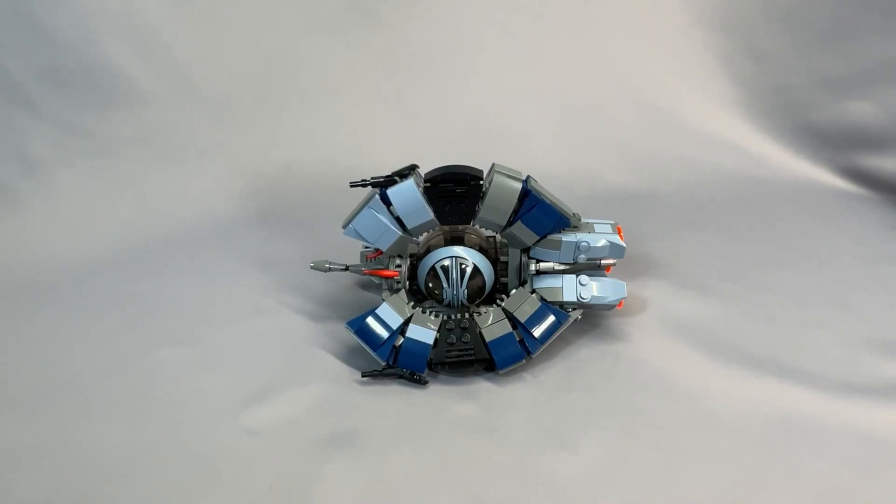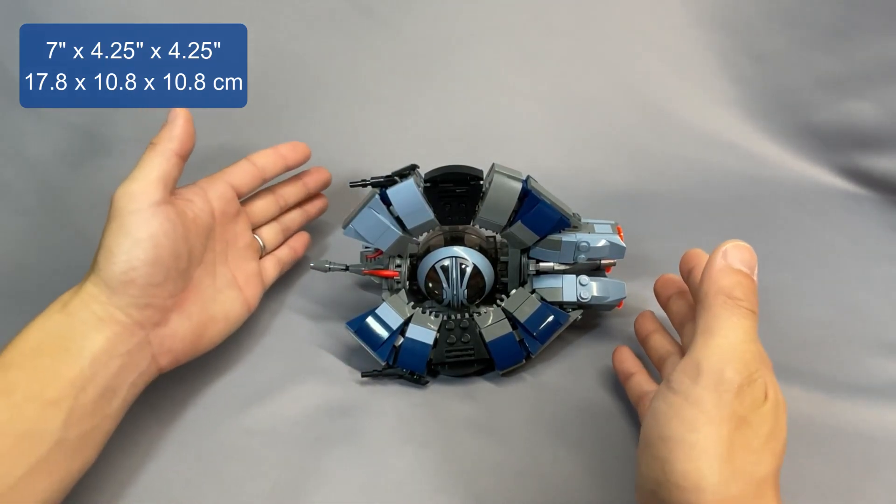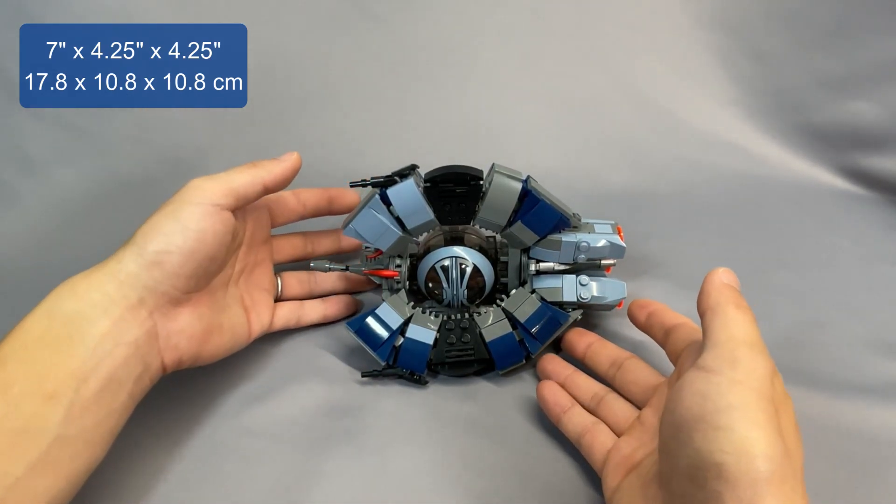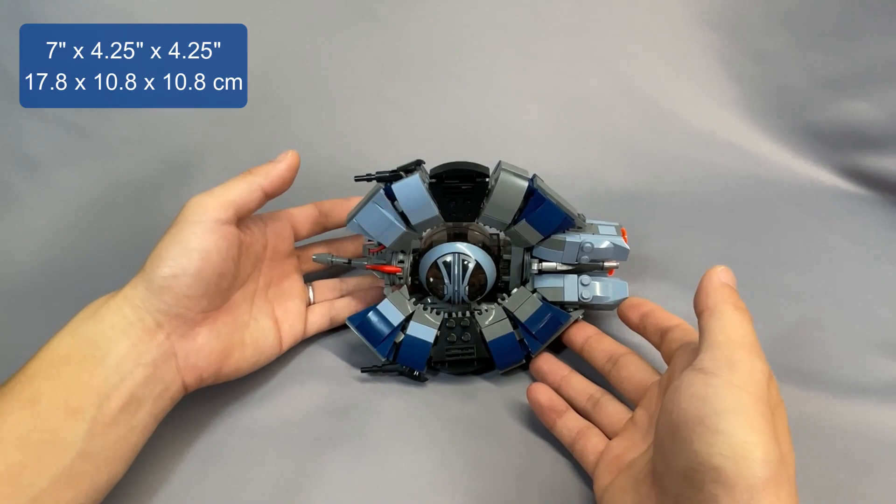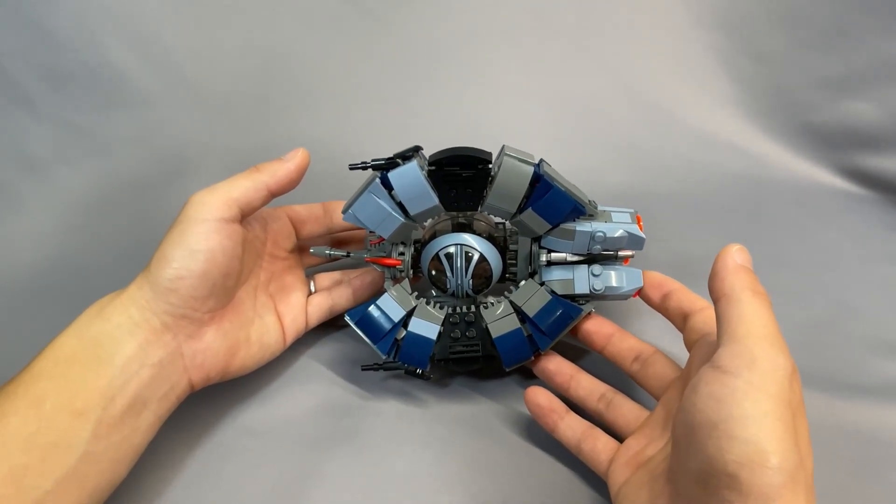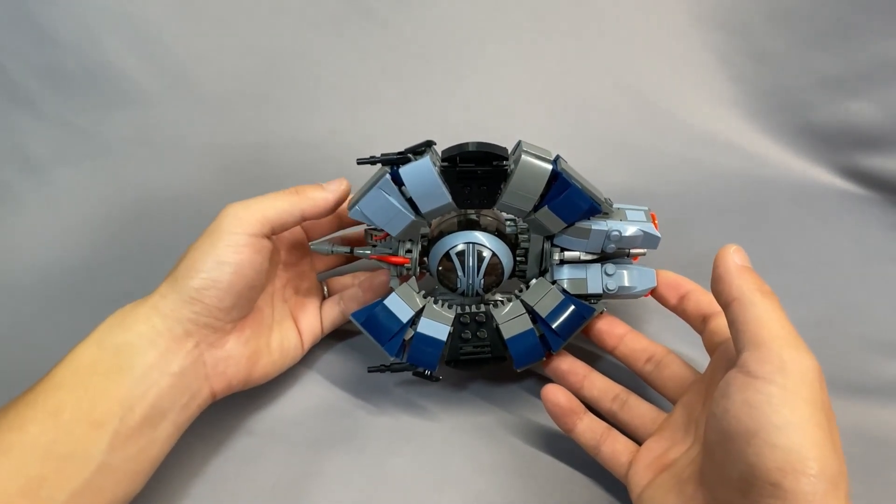Grimder's Tri-Fighter measures a hair over 7 inches long, 4.25 inches tall, and 4.25 inches wide. The Tri-Fighter was only 5.4 meters long in canon, so this is clearly not minifigure scale, nor is it intending to be.